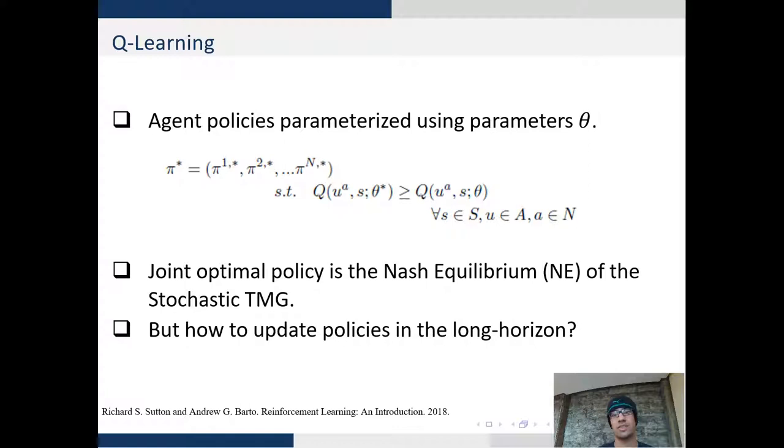We now talk about policies in Q-learning. Each agent has its own policy and it is parameterized by parameters theta. The joint policy for all agents is optimal only when each individual policy is optimal giving rise to the optimal Q-values.